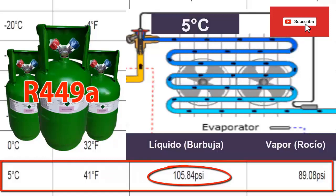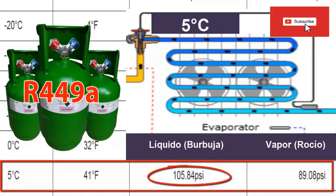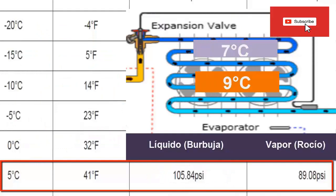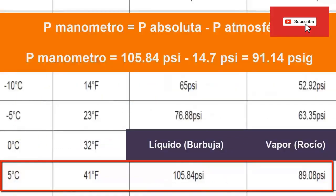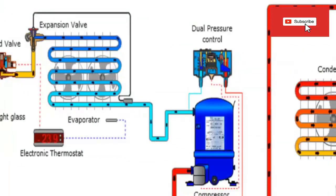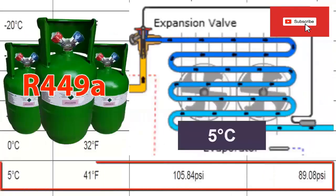Since R449A has glide, even though it is 5 degrees at the inlet, this value begins to increase. Therefore, before leaving the evaporator, when there is simultaneously liquid and vapor, the temperature will not be 5 degrees but will be higher. If we want the 5 degrees to occur not at the inlet but rather at the outlet of the evaporator — that is, when there is pure refrigerant in the form of vapor — then we must work with vapor or dew pressure, in this case with a value of 89.8 psi absolute.